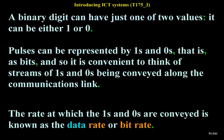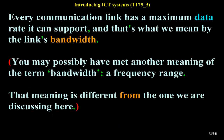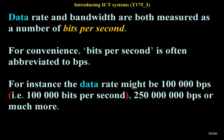The rate at which the ones and zeros are conveyed is known as the data rate or bit rate. Every communication link has a maximum data rate it can support, and that's what we mean by the link's bandwidth. Data rate and bandwidth are both measured as a number of bits per second, often abbreviated to bps. For instance, the data rate might be 10,000 bps, 250,000 bps, or much more.